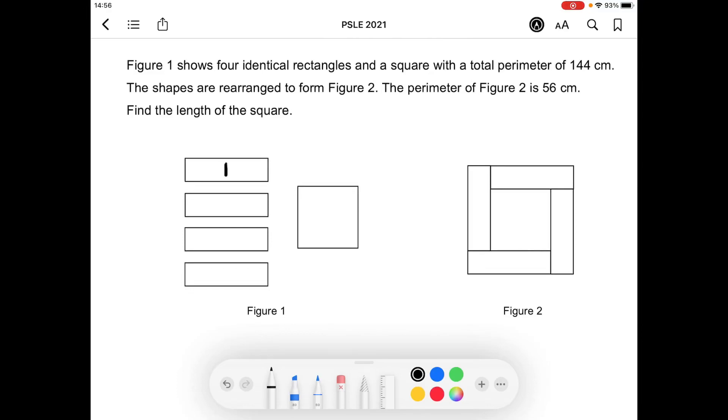Figure 1 shows 4 identical rectangles (1, 2, 3, 4) and a square with a total perimeter of 144 centimeters. The shapes are rearranged to form Figure 2.